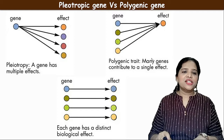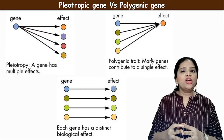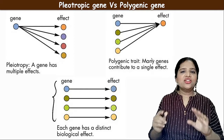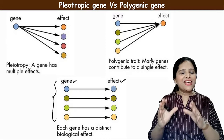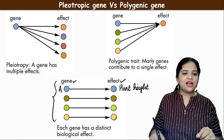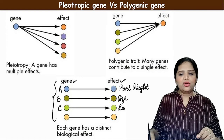Now let us understand the differences between pleiotropic gene and polygenic gene — these are two different concepts, but both are examples of deviations from Mendelism. In normal Mendelian genetics, one gene controls one character in an organism — for example, gene A controls plant height, gene B controls pod size, gene C controls root thickness.